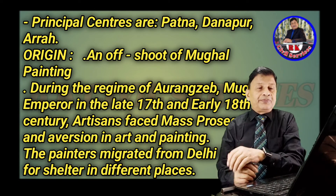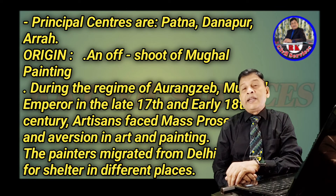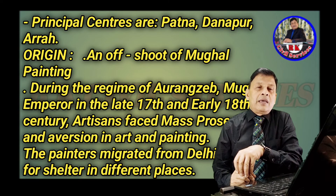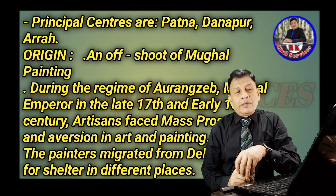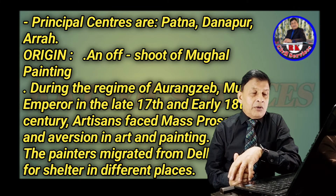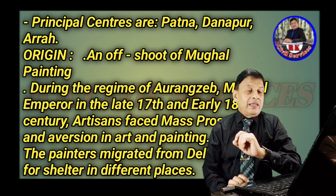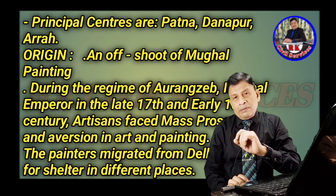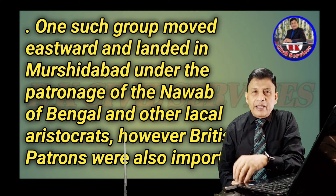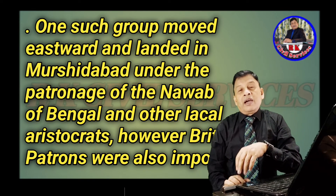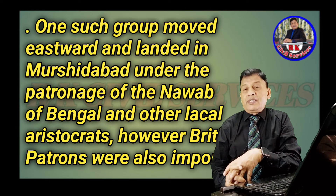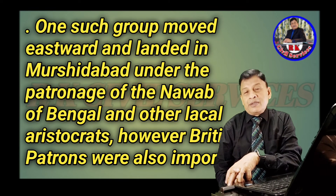During the reign of Aurangzeb, the Mughal emperor, in the late 17th and early 18th century, artisans within the Mughal Empire faced mass persecution and aversion to art and painting. Due to this, painters migrated from Delhi looking for shelter in different places. One such group moved eastward and landed in Murshidabad, under the patronage of the Nawab of Bengal and other local aristocrats and British patrons.